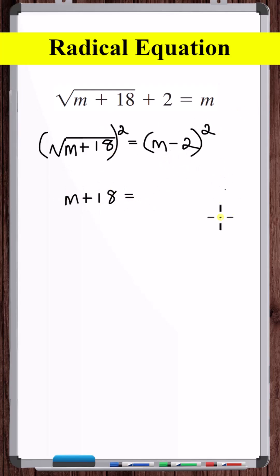m minus 2 squared is m squared minus 2m minus 2m is minus 4m. Then minus 2 times 2 is plus 4.